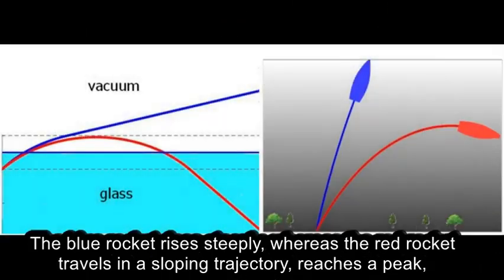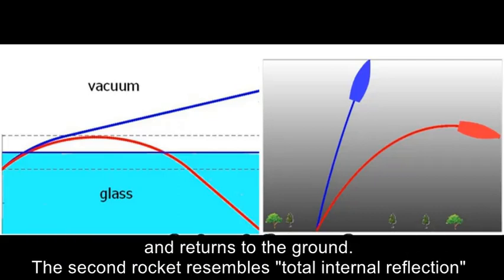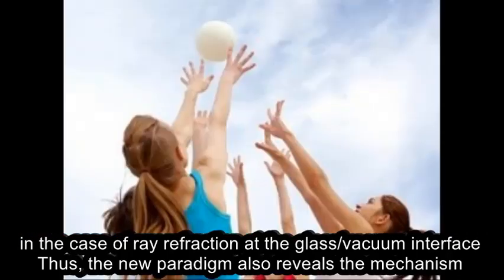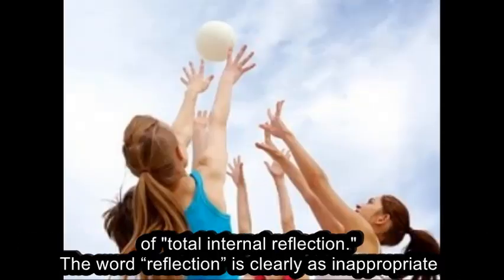whereas the red rocket travels in a sloping trajectory, reaches a peak, and returns to the ground. The second rocket resembles total internal reflection, in the case of ray refraction at the glass vacuum interface. Thus, the new paradigm also reveals the mechanism of total internal reflection.